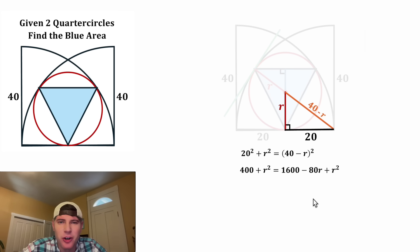And now both sides contain an R squared. So let's subtract R squared from both sides. Let's also subtract 400 from both sides and add 80 R to both sides. On the left-hand side, all of this will cancel out, leaving us with 80 R.